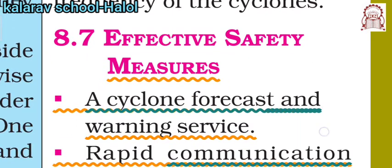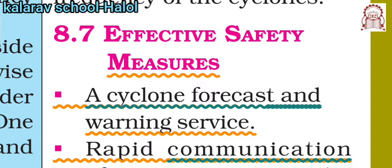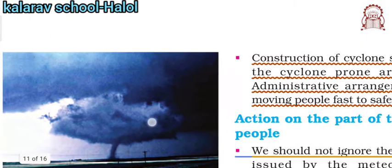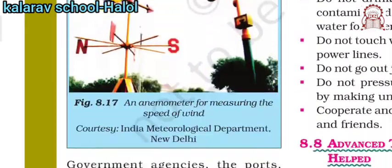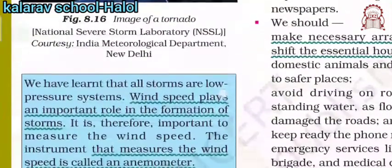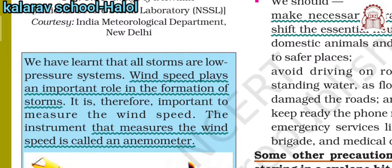Next are effective safety measures. Number one is cyclone forecast and warning services, done by the meteorological department. Number two is rapid communication of warnings to the poor fishermen, ships, and the general public by government agencies. Wind speeds play an important role in the formation of storms. The speed of the wind is measured by an instrument called an anemometer.